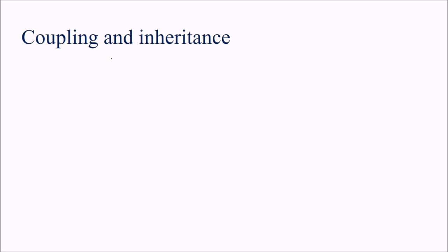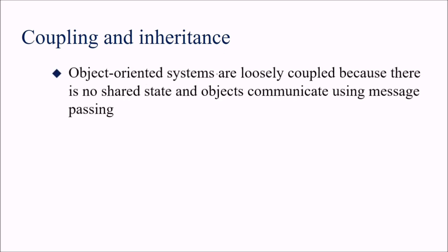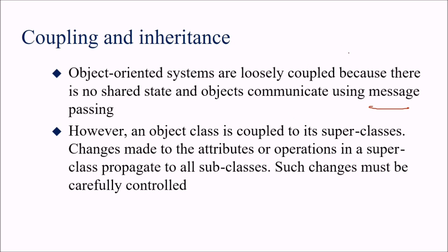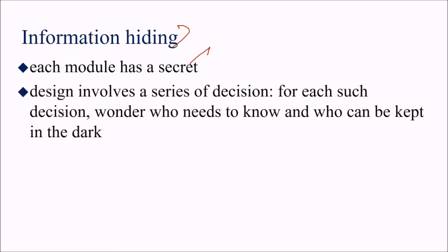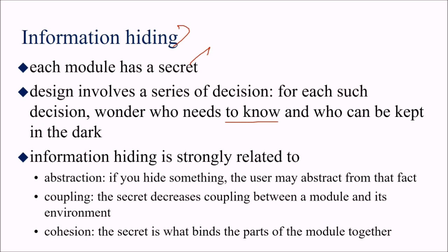Coupling with inheritance: object-oriented systems are loosely coupled because there is no shared state and objects communicate only via message passing. However, an object class is coupled to its superclass — changes made to attributes or operations in a superclass will propagate to subclasses, so such changes must be carefully controlled. Information hiding: each module has a secret. The design involves a series of decisions; for each decision, we consider who needs to know and who can be kept in the dark. Information hiding is strongly related to abstraction — if you hide something, the user can abstract from that fact. The secret decreases coupling between a module and its environment and binds the parts of the module together, increasing cohesion.